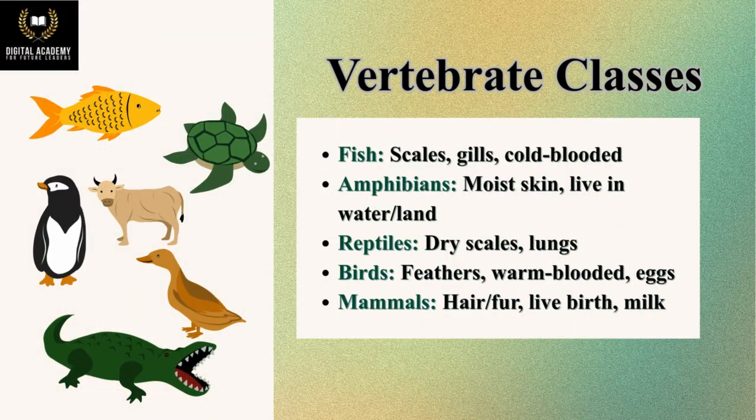Vertebrate classes: Fish – scales, gills, cold-blooded; Amphibians – moist skin, live on water or land; Reptiles – dry scales, lungs; Birds – feathers, warm-blooded, lay eggs; Mammals – hair or fur, live birth, produce milk.